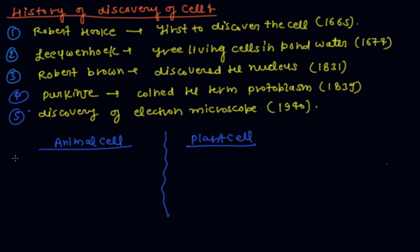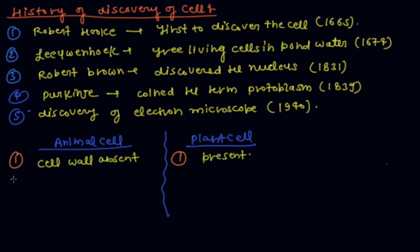The first difference between animal cells and plant cells is the cell wall. Cell walls are found in plant cells but not in animal cells.